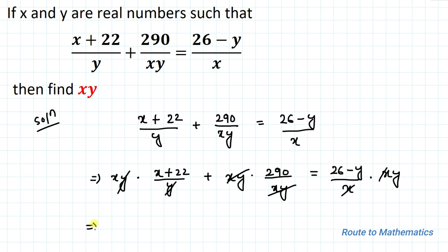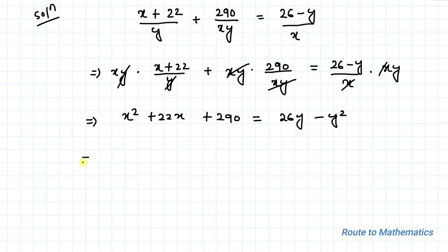Our equation becomes x² + 22x + 290 = 26y - y².